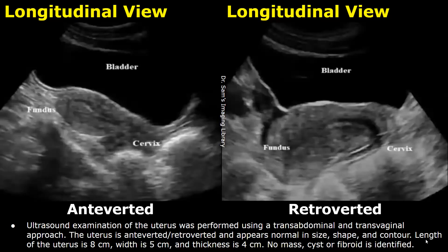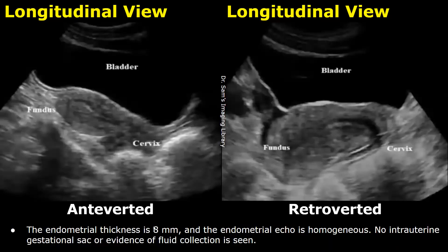Then you can write the measurements of the uterus and finally mention the presence or absence of any mass. Then you can mention the endometrial thickness and write the appearance of the endometrium — in this example, it is homogeneous. In the end, you can write: 'No intrauterine gestational sac or evidence of fluid collection is seen.'